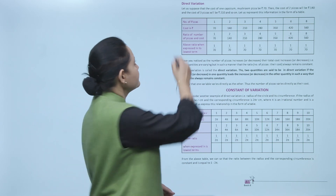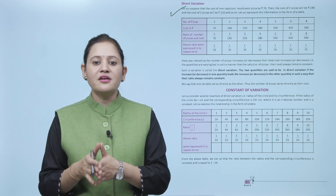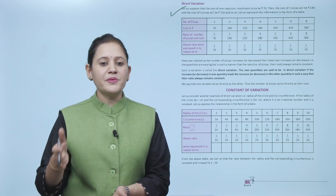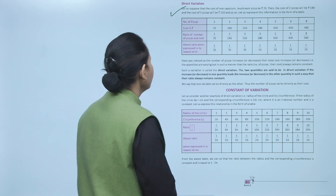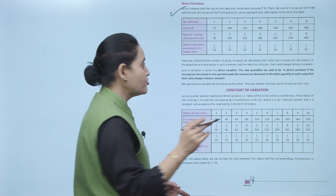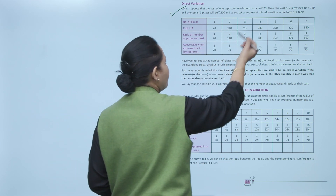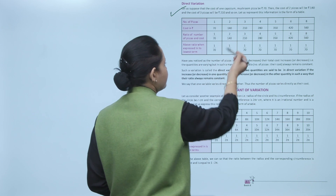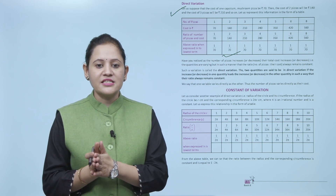Now, direct variation. Suppose the cost of one capsicum mushroom pizza is ₹70. Then the cost of two pizzas is ₹140 and three pizzas is ₹210, and so on. Representing this in a table: number of pizzas 1, 2, 3 — cost in rupees 70, 140, 210. The ratio of number of pizzas to cost is 1/70, 2/140, 3/210 — all equal to 1/70.